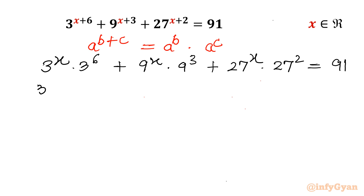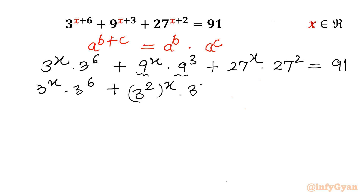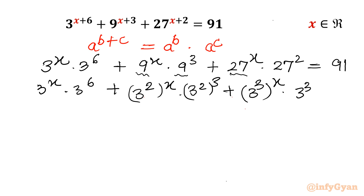Again, I can write 3^x · 3^6. Now for 9, I can write 3^2, so it becomes (3^2)^x · (3^2)^3. And for 27, we can write 3^3, so it becomes (3^3)^x · (3^3)^2. The right hand side is 91.